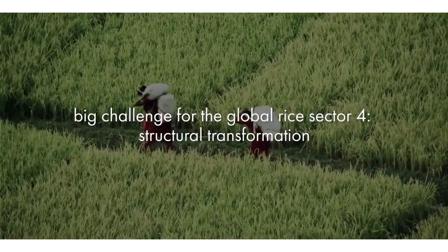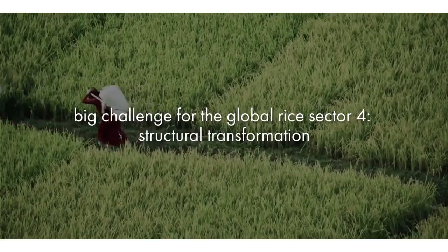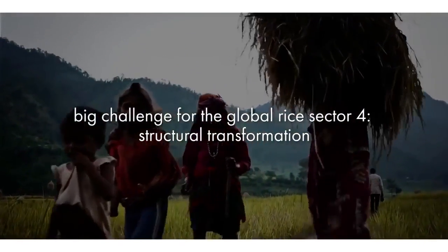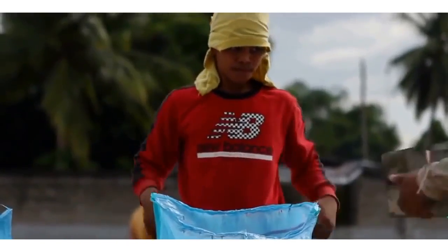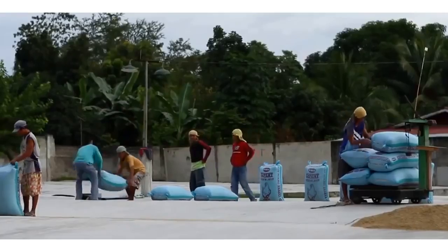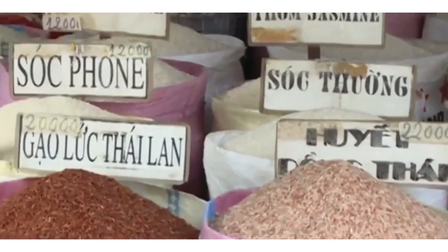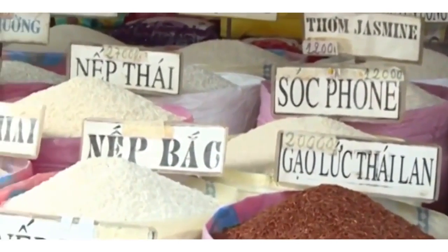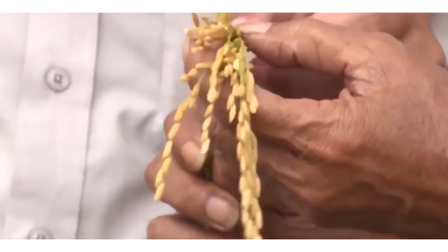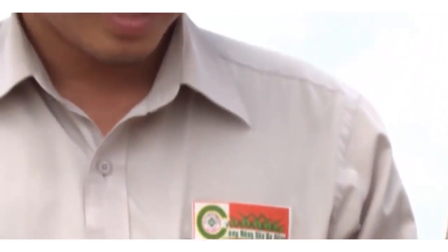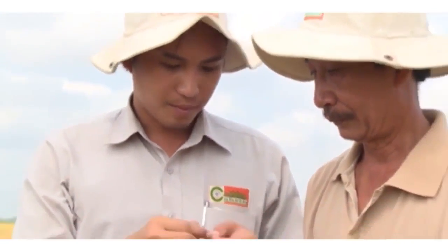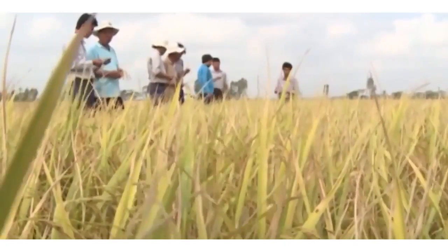Lastly, there needs to be a structural transformation of the rice sector. One dimension is migration and rising labor costs — and often a lack of available labor, particularly in Asia — which requires more mechanized forms of rice production along the entire value chain. A second element is changes in consumer preferences: consumers increasingly define what kind of rice they want, paying much more attention to higher quality rice and also to how it is grown, wanting assurance that rice meets high sustainability standards.